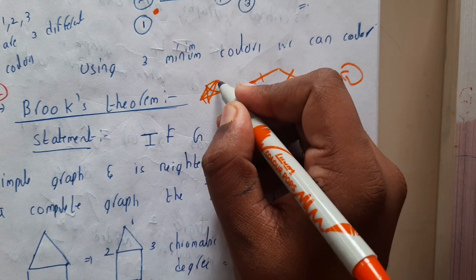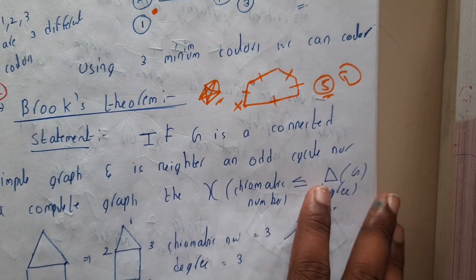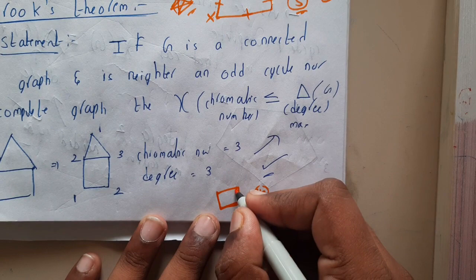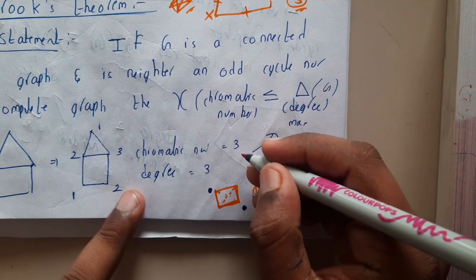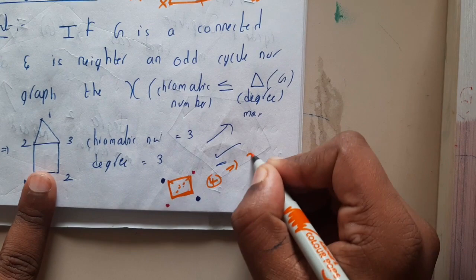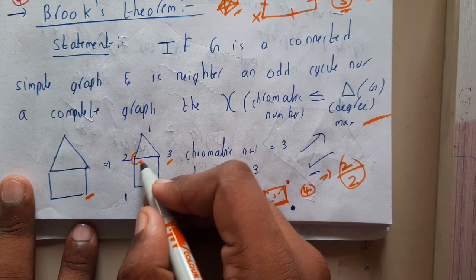The graph should also not be a complete graph. For any other graphs besides these two exceptions, the theorem is applicable. For example, an even cycle is not an odd cycle, and if two edges are missing it is not a complete graph. You can color it in the opposite way — blue, blue, pink, pink — using two colors. The maximum degree is also two, so the condition is satisfied.